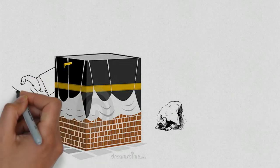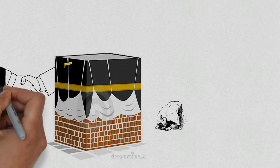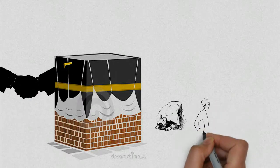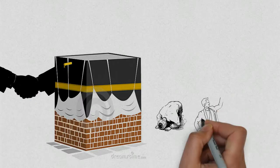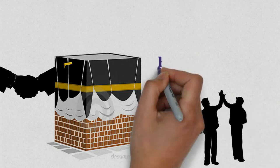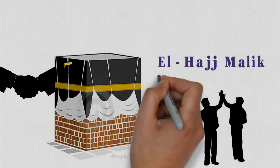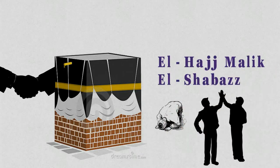He saw the brotherhood of the true Muslims, people from all races and colors from all over the world coming together as one. And so he accepted true orthodox Islam and Malcolm X changed his name to Al-Hajj Malik al-Shabazz.